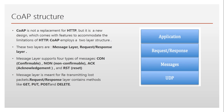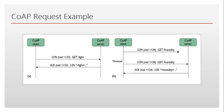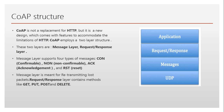The message layer is actually meant for retransmitting lost packets. The request/response layer has methods called GET, PUT, POST, and DELETE, which are used to access a resource. In IoT, a resource is where we have the sensor.